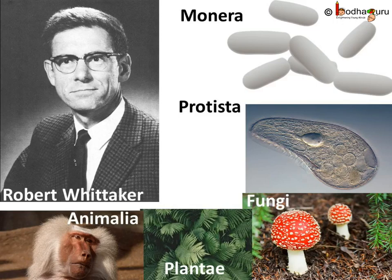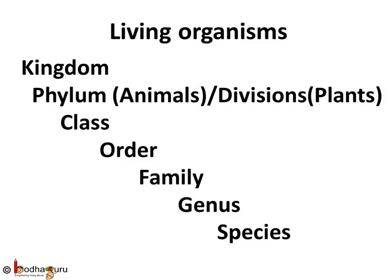The classification that Whittaker proposed has five kingdoms: Monera, Protista, Fungi, Plantae, and Animalia. But still, organisms of a kingdom have such wide-ranging distinct characteristics that kingdoms had to be further divided to do them justice. So biologists kept making sub-categories until they reached a classification where every group has some distinct features which other groups don't have.